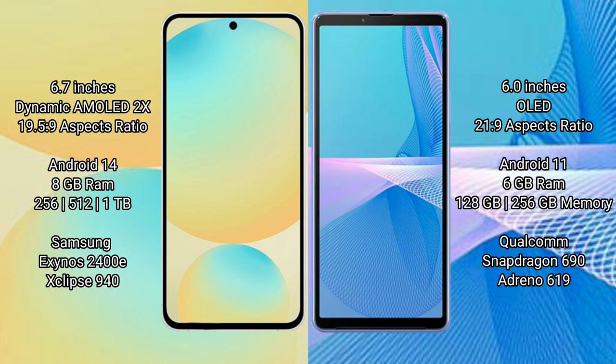The Samsung Galaxy S24 FE has 8GB of RAM and internal storage options of 128GB to 256GB, up to 512GB. It is powered by the Exynos 2400E processor with an Xclipse 940 GPU.